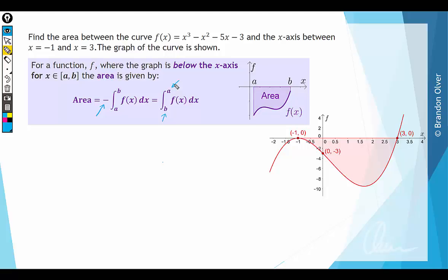We're going to swap the terminals of integration. So our area can be written as the integral, and now instead of negative 1 to 3, we're going to go between 3 and negative 1 for our function which is x cubed minus x squared minus 5x minus 3 dx.